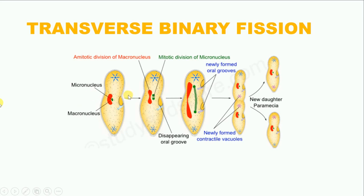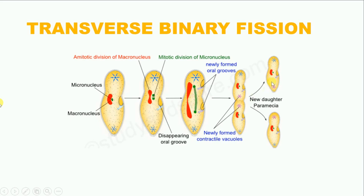Now we know that a paramecium shows nuclear dimorphism — that is, it has two different types of nuclei. The bigger one is the macronucleus and the smaller one is the micronucleus. During binary fission, the macronucleus divides by amitosis, in which there is no spindle fibre formation, whereas the micronucleus divides by mitosis and so there is spindle fibre formation. At the end of binary fission, we get two daughter paramecia which are identical to the parent organism.